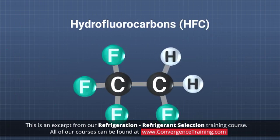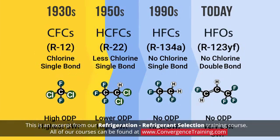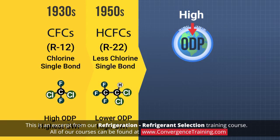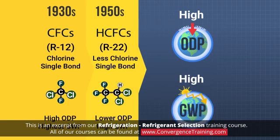And hydrofluorocarbons, or HFCs, which contain hydrogen, fluorine, and carbon. CFC and HCFC refrigerants were widely used in the 20th century because they are relatively inert, non-flammable, and non-toxic, which make them much safer than early refrigerants like ammonia, sulfur dioxide, and methyl chloride. However, CFCs and HCFCs are being phased out because it was discovered that they have both high ozone depletion potential, or ODP, and high global warming potential, or GWP.